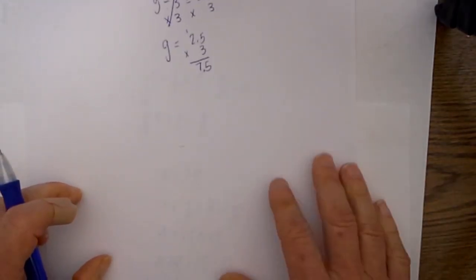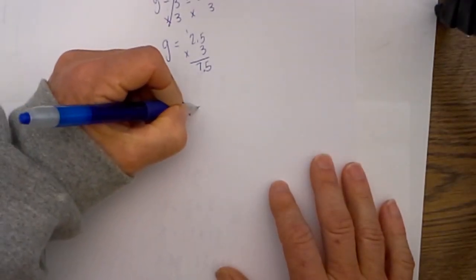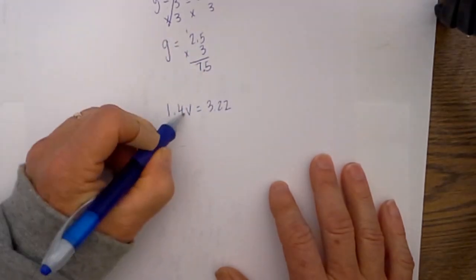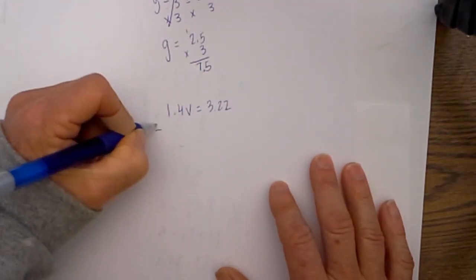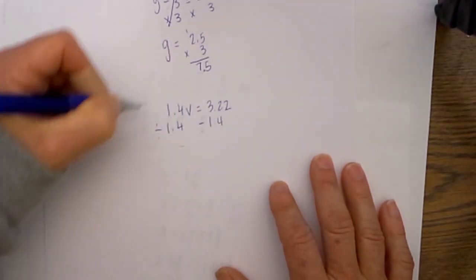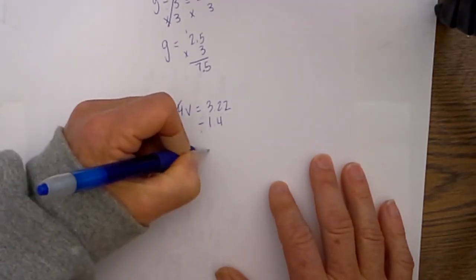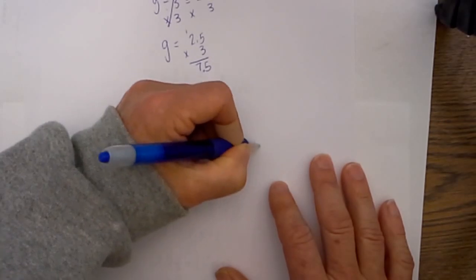Next up let's do one with division. I have 1.4v is equal to 3.22. To isolate the variable I undo multiplication with division, so I divide both sides by 1.4. The 1.4's cancel and I am left with v is equal to 3.22 divided by 1.4.